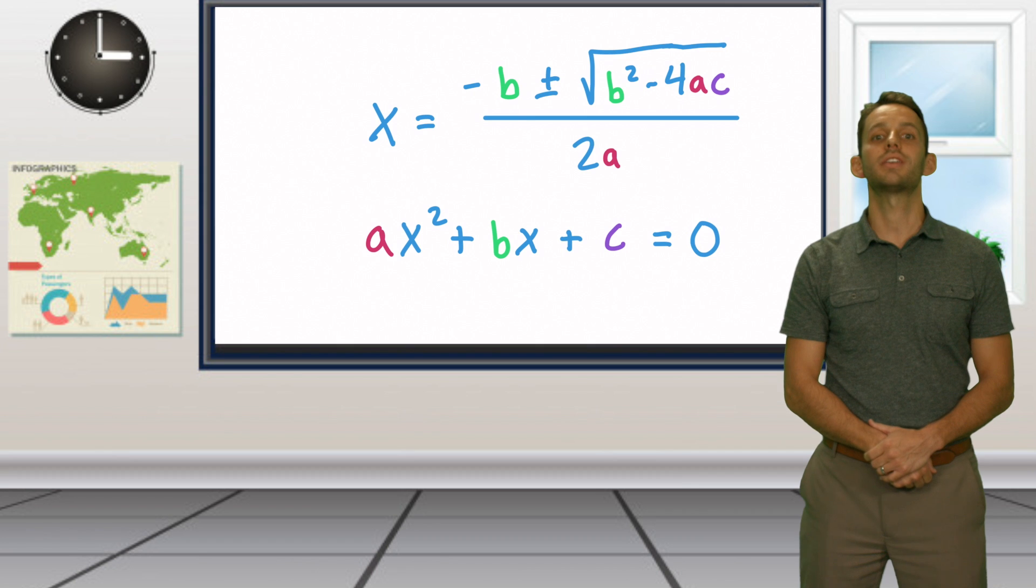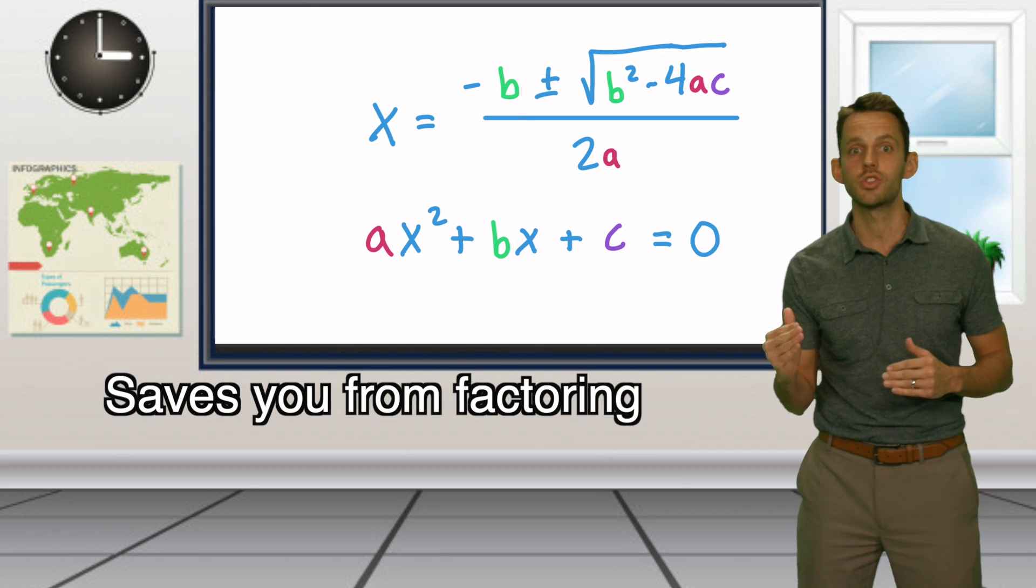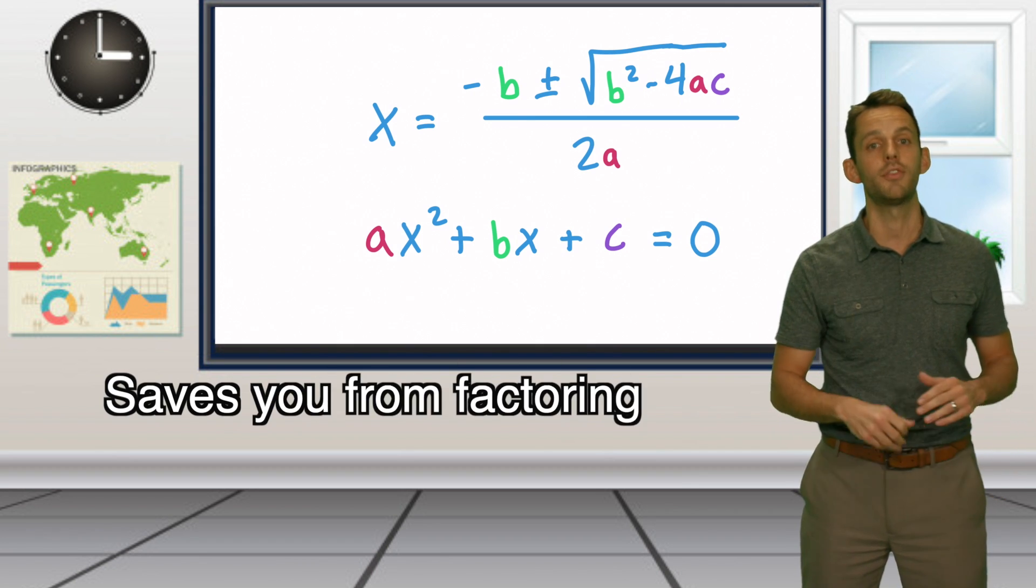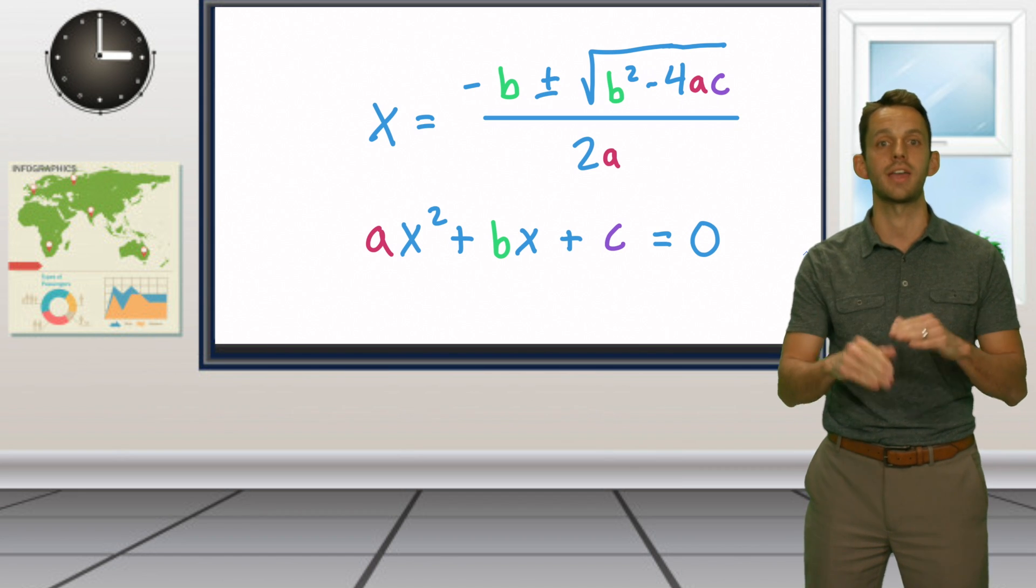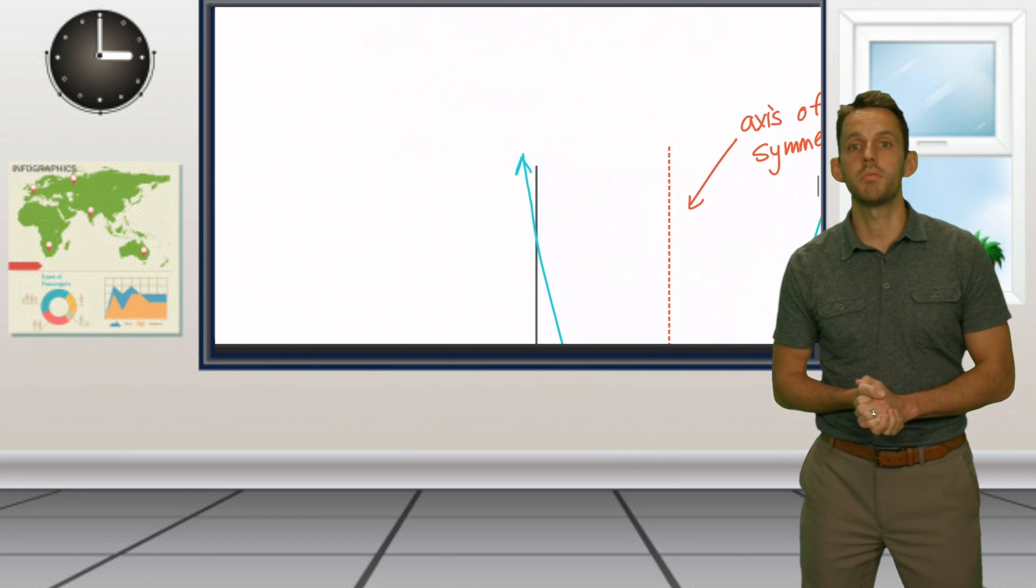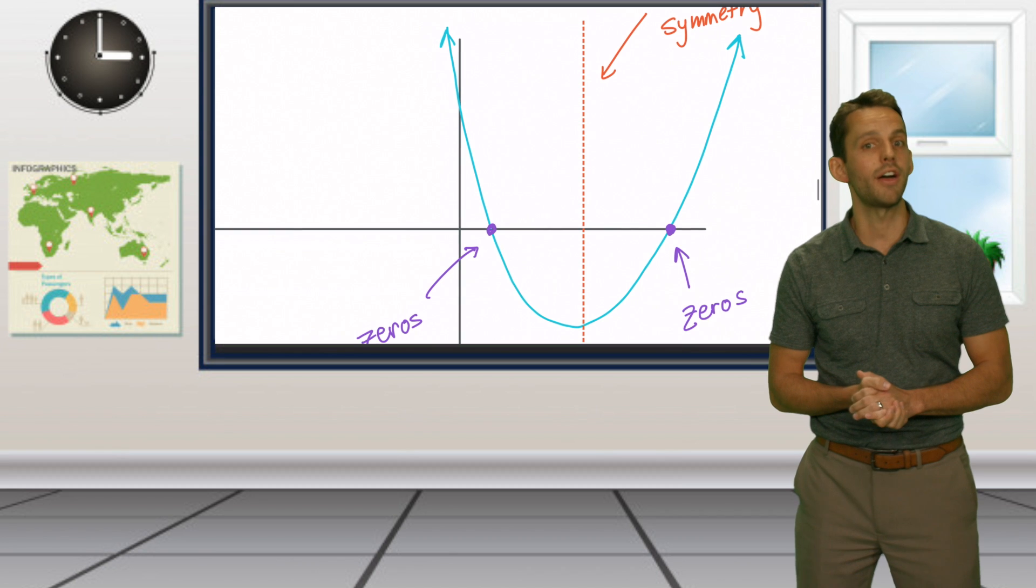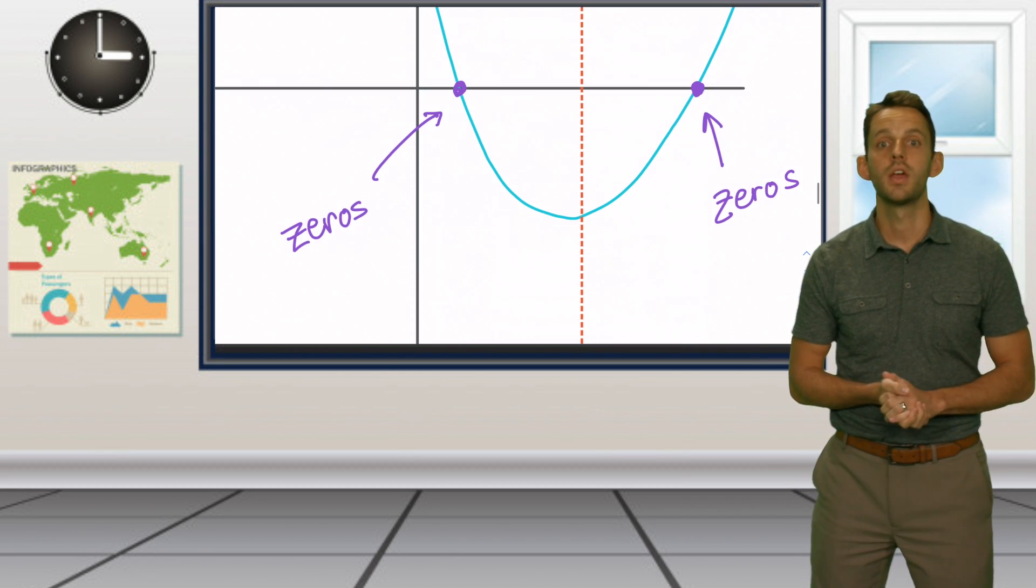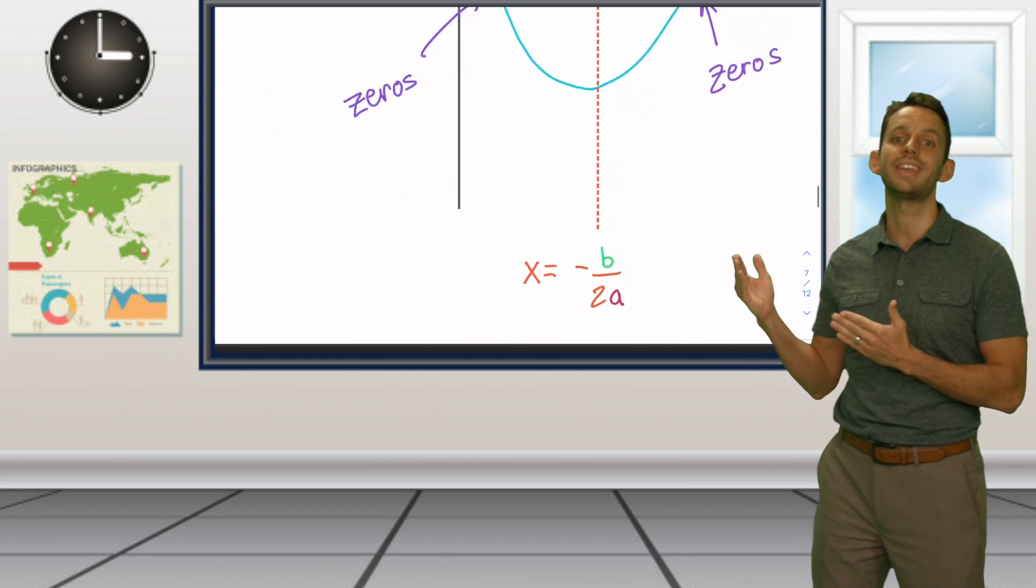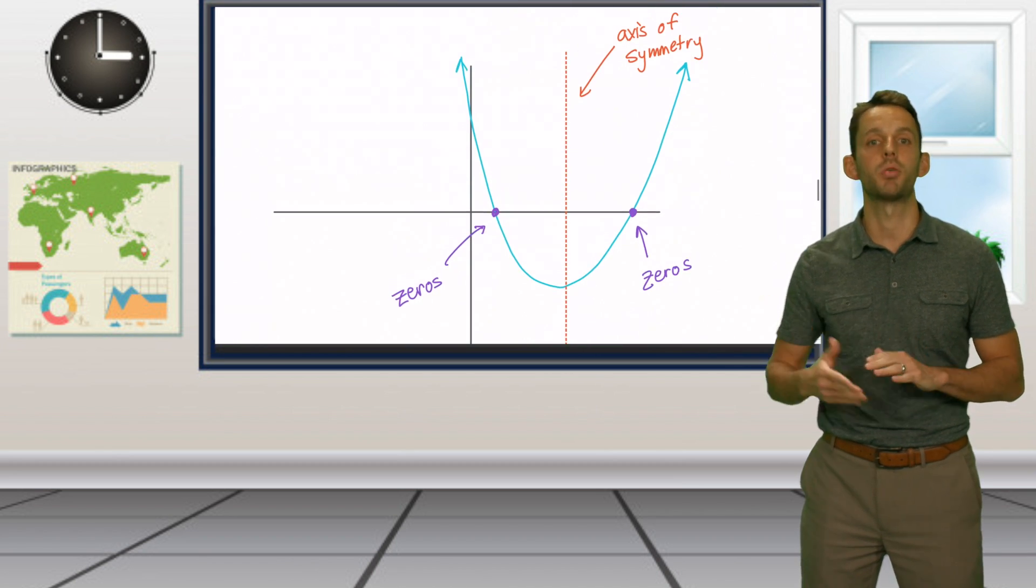The quadratic formula saves you from factoring, so if you had to concentrate your efforts to just one formula for quadratics, this is your guy. The quadratic formula can also help with graphing quadratic functions, finding the zeros of a function, and determining the axis of symmetry of a parabola.